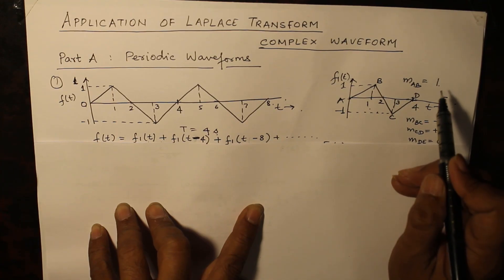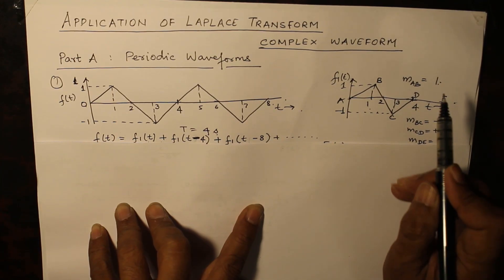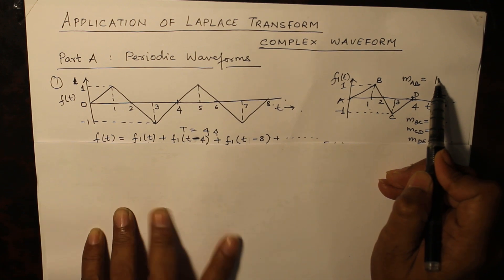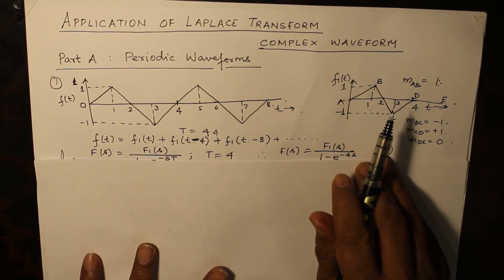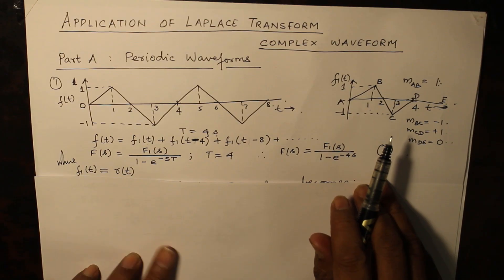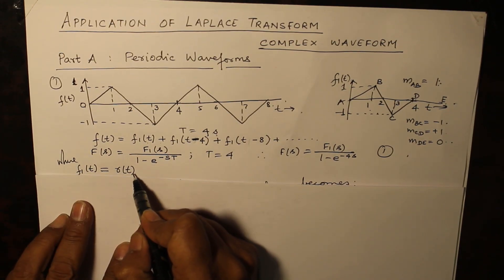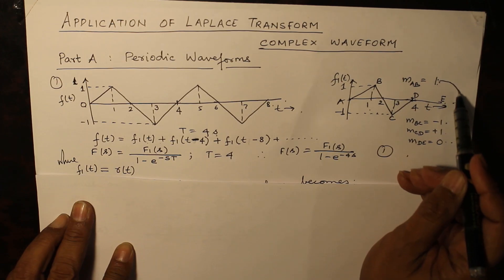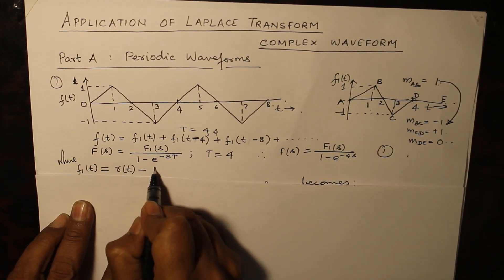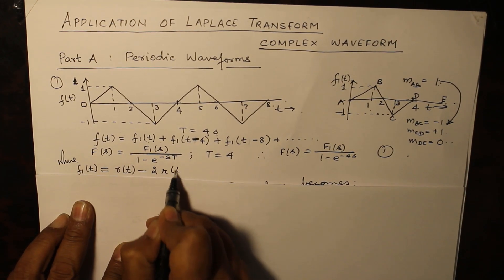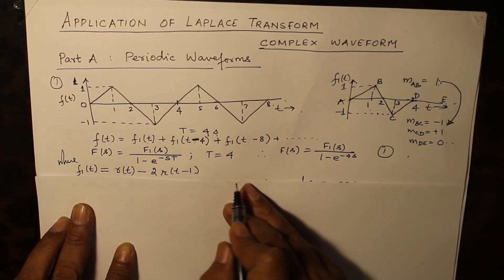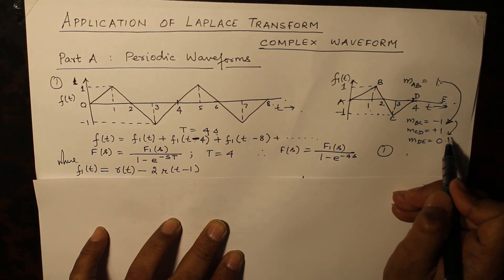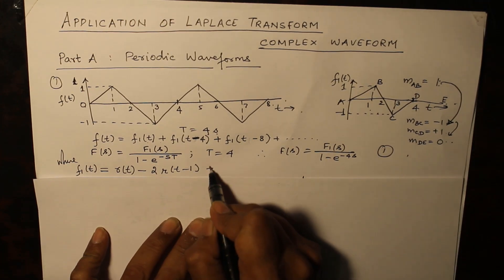So the slope is rising from 0 initially to 1, therefore the first term will be r(t). The second term: the slope changes from 1 to minus 1, so it will be minus twice of r(t-1). After that the slope has become from minus 1 to plus 1, so there is a change of 2 and it is happening at t equals 3.